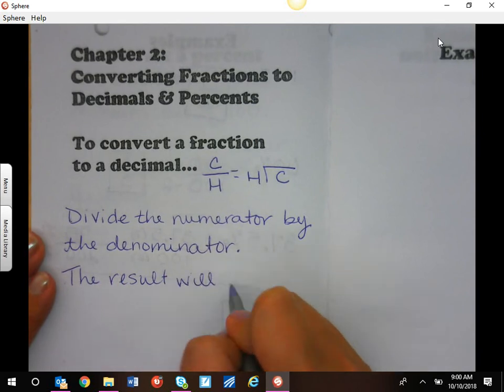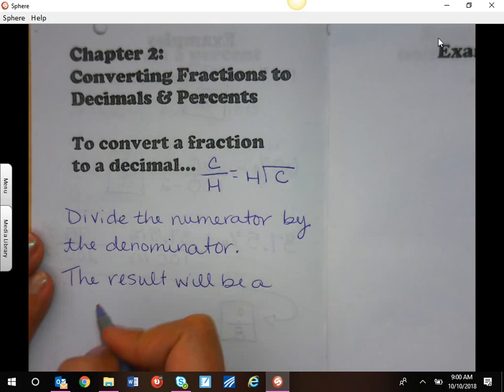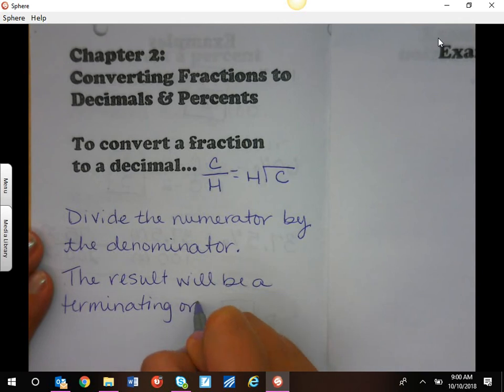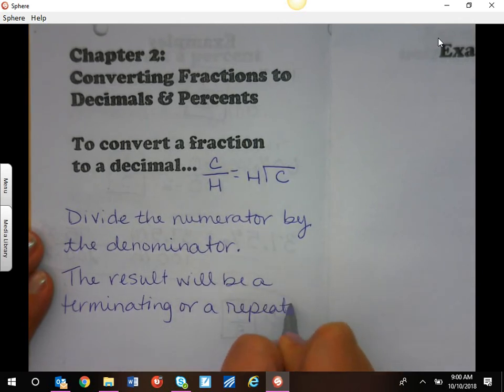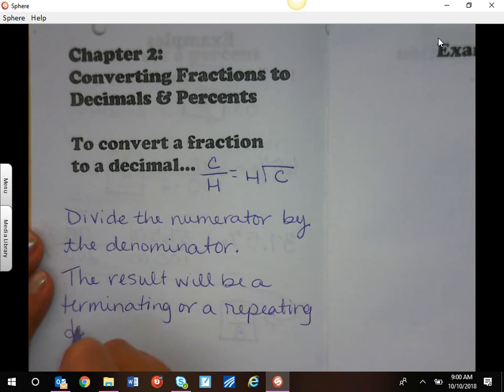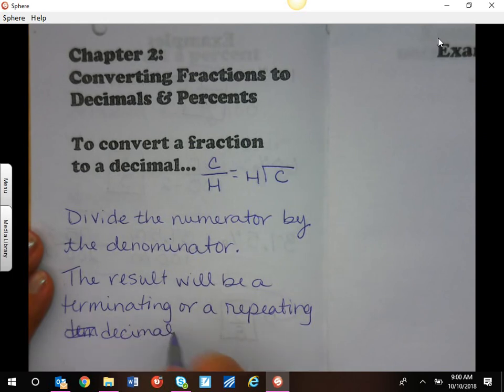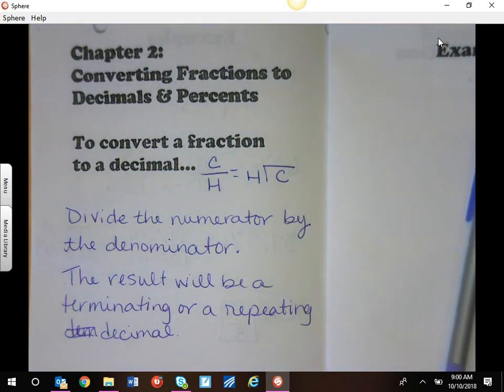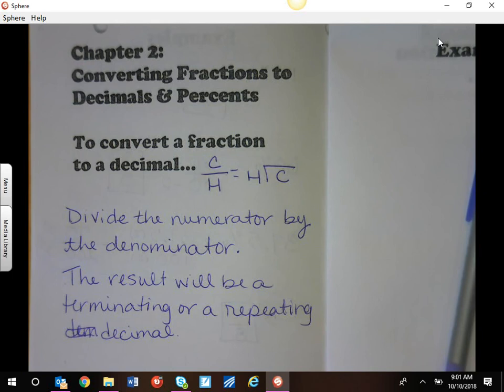And we will get a terminating, which means it stops, or a repeating decimal. And if it stops, if it terminates, then that means that it will be done. And then if it repeats, we're going to have to use bar notation to make that happen. Now I'm going to show you both of those methods with example problems next time.